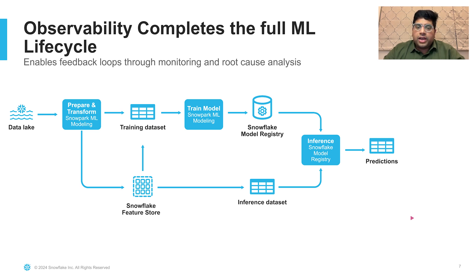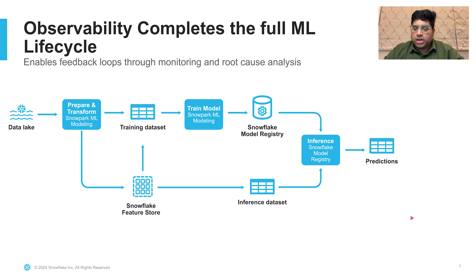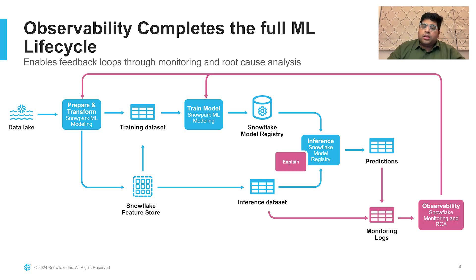Observability is a key piece that completes the full ML lifecycle within Snowflake. Today, Snowflake has generally available features such as Feature Store, Model Registry, and Snowpark ML that allow you to create a training dataset from your Data Lake or Feature Store, train a model, and register it in Model Registry. Once in Model Registry, you can use its inference capabilities for computing predictions on production data. The observability piece works on these predictions, which are stored in monitoring logs, with the observability module computing metrics and allowing you to track them in dashboards.